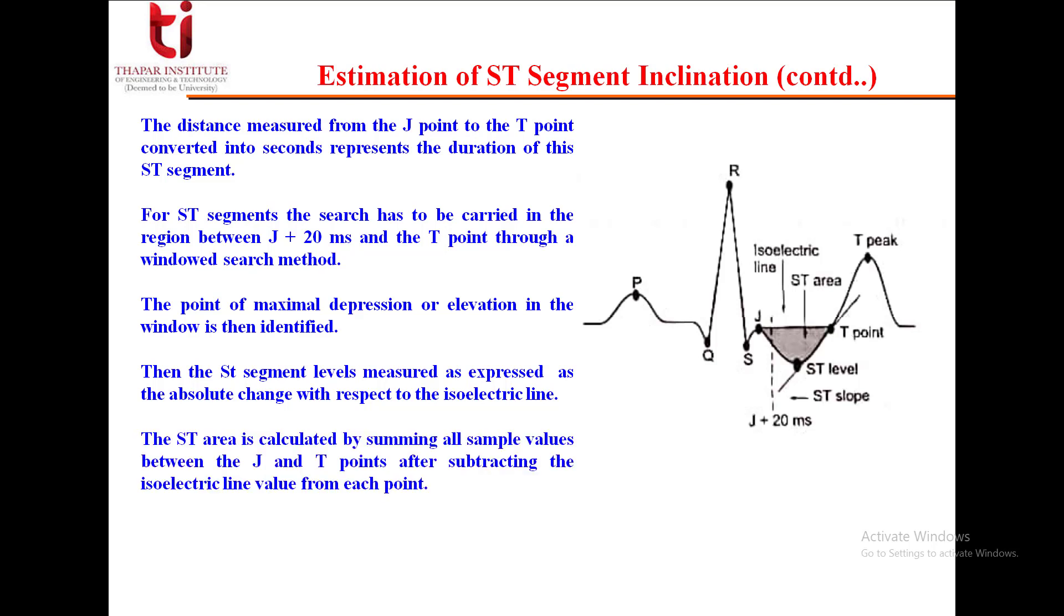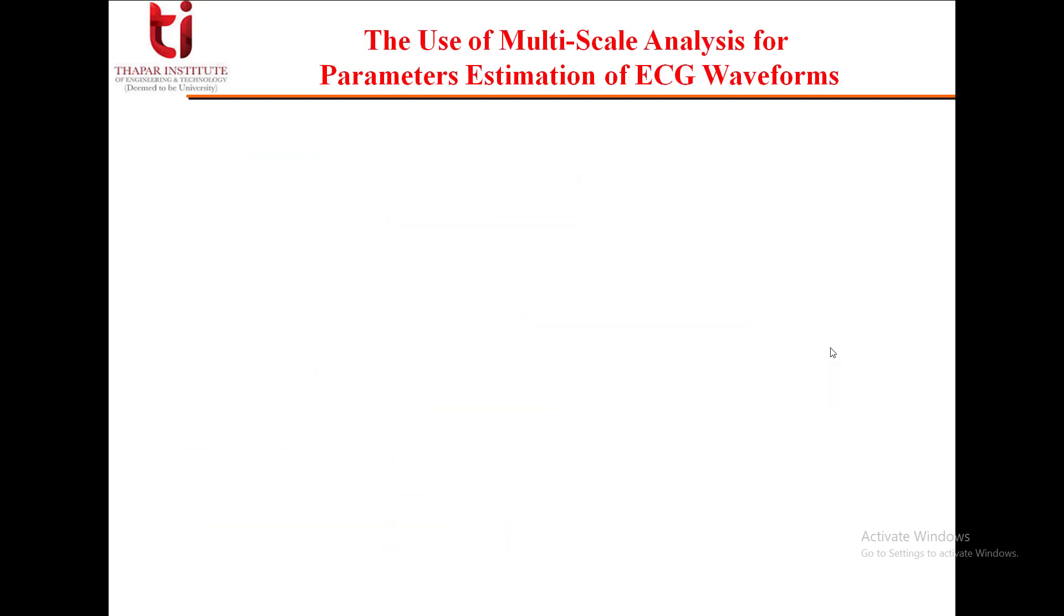The ST area, the shaded area, is calculated by summing all sample values between the J and T points after subtracting the isoelectric line value from each point. The ST slope is defined as the amplitude difference between the ST segment point and the T point divided by the corresponding time interval, and accordingly it is calculated.